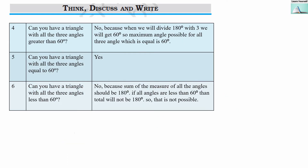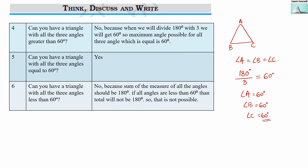Our fourth question: can you have a triangle with all three angles greater than 60 degrees? No, because when we divide 180 degrees by 3, we get exactly 60 degrees — that is the maximum possibility when all three angles are equal. If we draw a triangle where angle A equals angle B equals angle C, we divide 180 by 3, which gives 60 degrees. That is the maximum measure when all three angles are equal, so no angle can be greater than 60 degrees in that scenario.